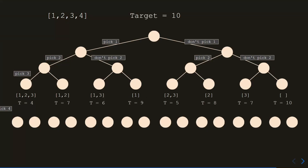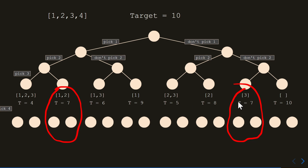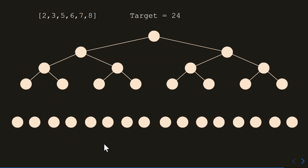Going back to the tree, if I add information about the target sum — say we want to make 10 — you can see that two subproblems are the same: in both cases we have to make 7, and in both cases we're going to consider number 4 next. So if we've already evaluated one subproblem, we don't have to evaluate the other. If there are many more numbers in the array, these two problems are essentially the same — both asking: can we make 7 starting from index 3?